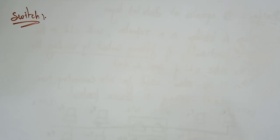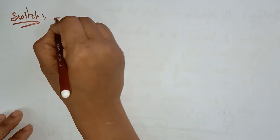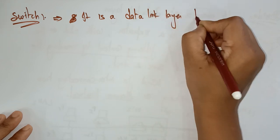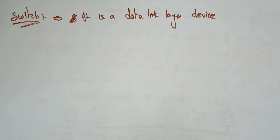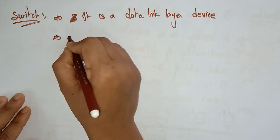Now let's look at the next networking device: the switch. All these devices seem to do similar work but with add-on functionality. The repeater has some features; by adding something, the hub is created. By adding more concepts, the bridge is created. Now coming to the switch — the switch is also a data link layer device, just like the bridge. The repeater and hub are physical layer devices, while the bridge and switch are data link layer devices.